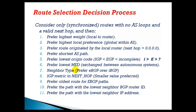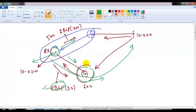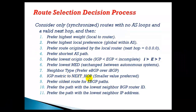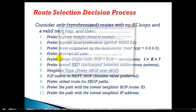If both routes come from the same neighbor type (both eBGP or both iBGP), BGP checks the nearest IGP metric — the smaller value is preferred. If those are also the same, it prefers the oldest route. If both are equally old, it prefers the lowest router ID, and if routes come from the same neighbor, it prefers the lowest neighbor IP address. By default, BGP does not perform load balancing.